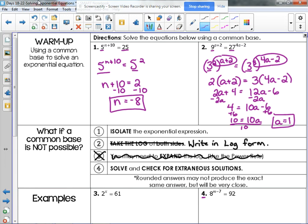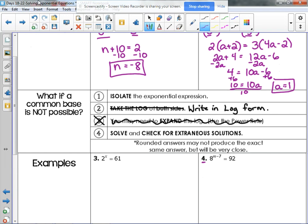Now, sometimes it is not possible for us to get a common base on both sides. For example, look at number 3 there. 2 is on the left side, 61 is on the right side. 61 is not a power of 2, so we cannot get the common base.